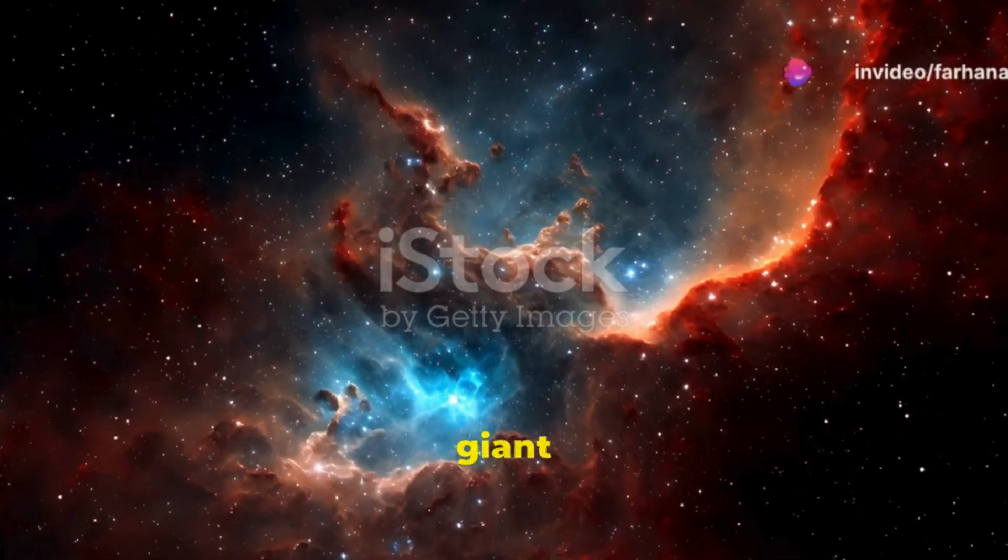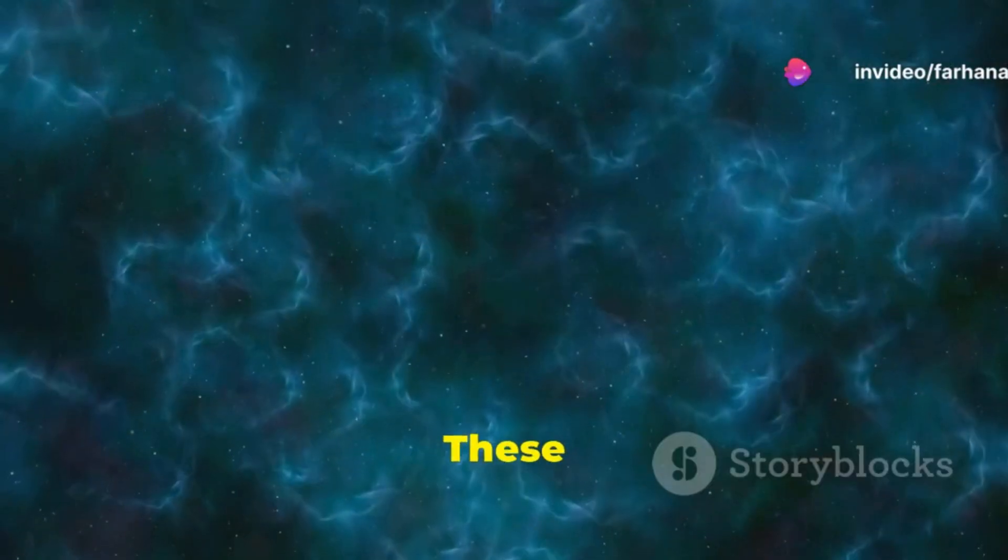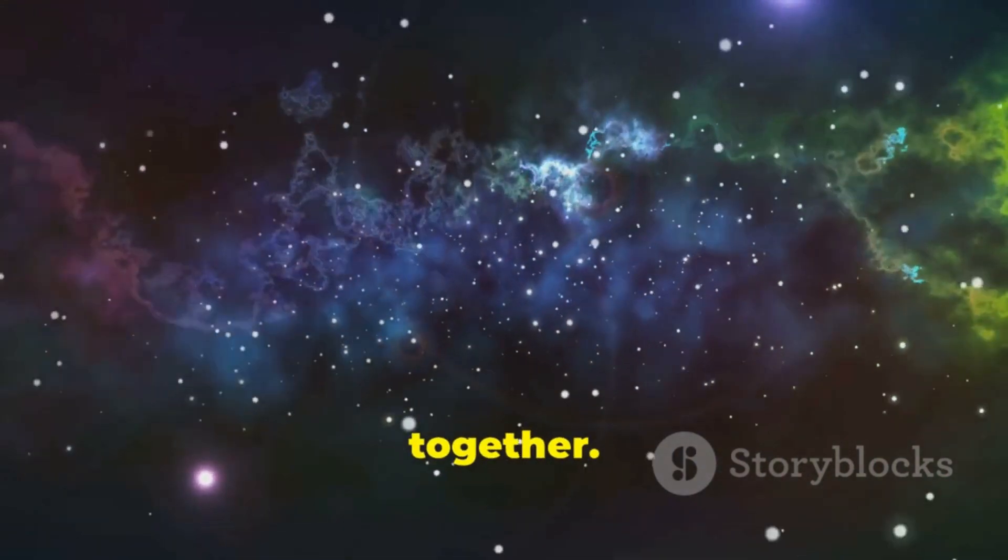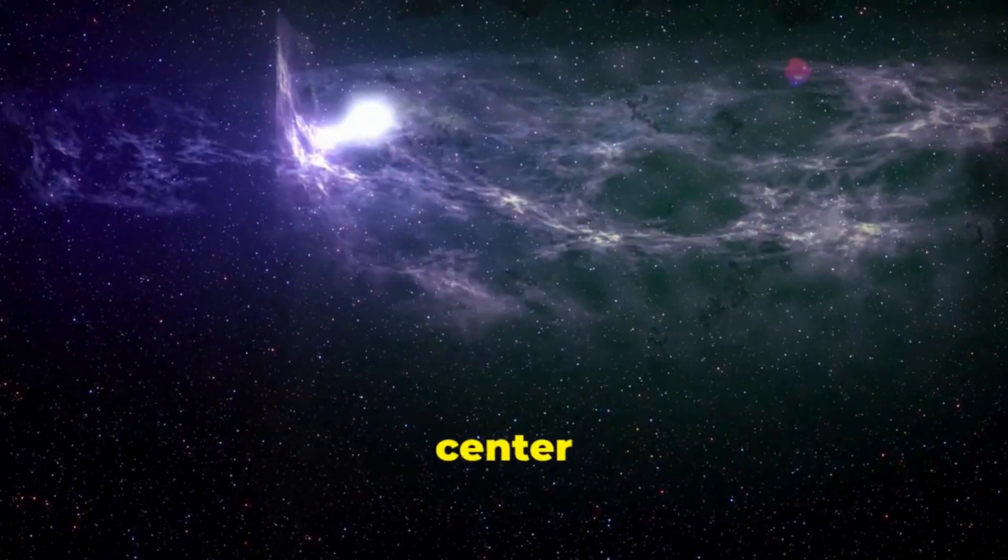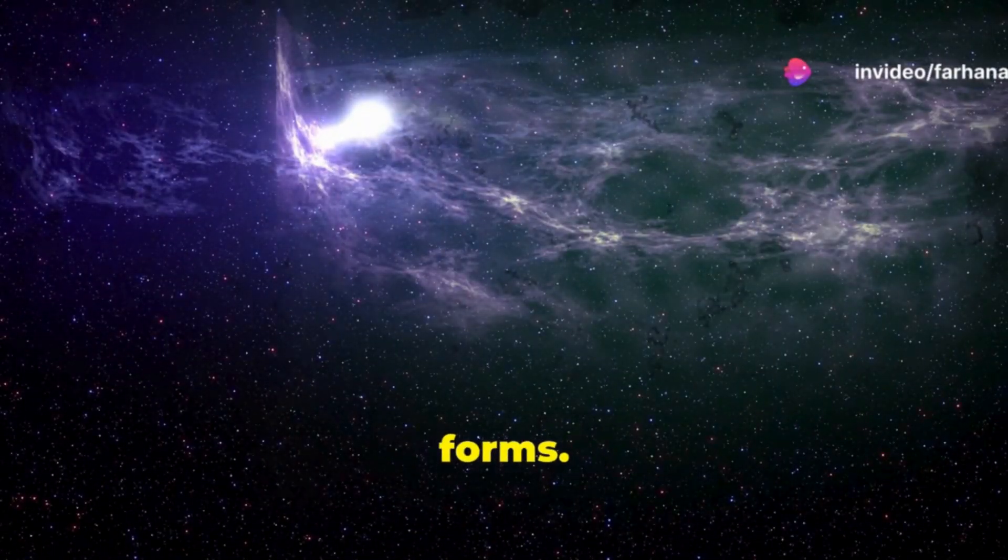Stars are born in giant clouds of gas and dust called nebulae. These nebulae are cold and dense. Gravity pulls the gas and dust together. As the cloud collapses, it heats up. At the center of the collapsing cloud, a protostar forms. A protostar is a hot, dense ball of gas.